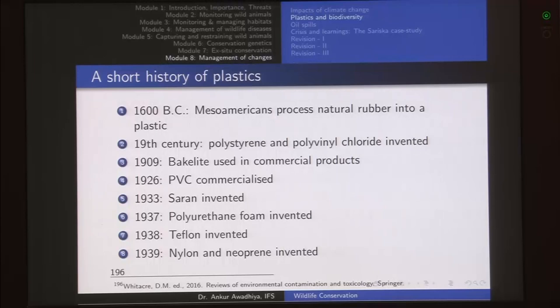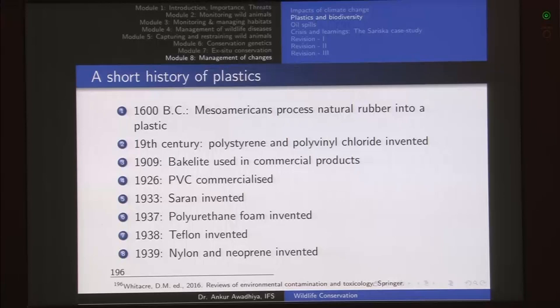For a very long period plastics were mostly in the background, but they started showing up again in the 19th century when polystyrene and polyvinyl fluoride were invented. Then in 1909, bakelite was used in a commercial product. Bakelite is a hard plastic that you would have seen in a number of old switches — the black colored switches we used to have were all made of bakelite. Then in 1926 polyvinyl fluoride was commercialized, and in 1933 saran was invented.